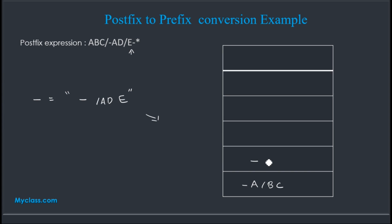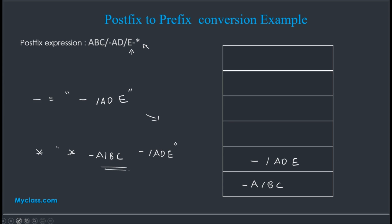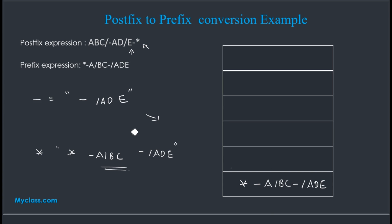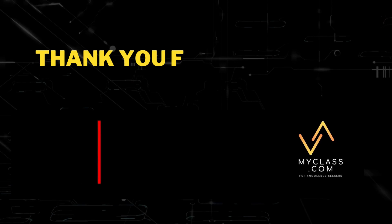Our last character is the '*' operator. We pop '-/ade' and '-a/bc' and form the final string: * -a/bc - /ade. This is our final prefix expression. So the result is: * - a / b c - / a d e. This is our prefix expression. Hope it is clear — thank you.